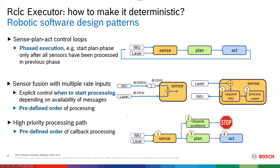A third requirement is a predefined order of callback processing — a way to prioritize a certain path, for example obstacle avoidance in the sense phase, followed by the obstacle avoidance algorithm, and only later the plan and act phase. We have looked at very different use cases and software patterns to figure out the minimal features needed in an RCLC executor to implement all of this.